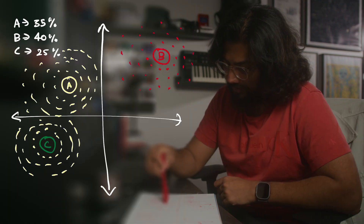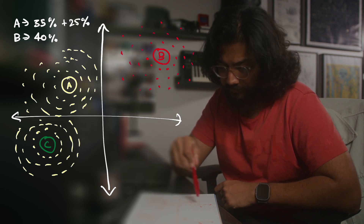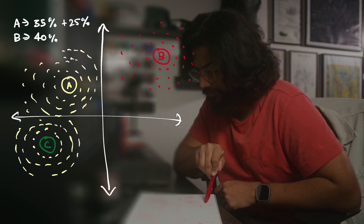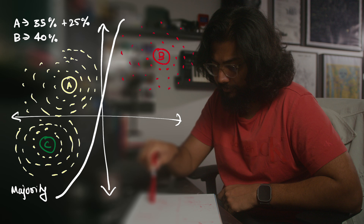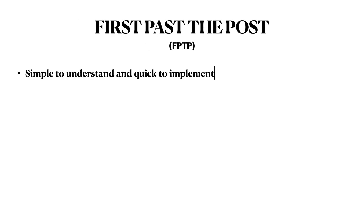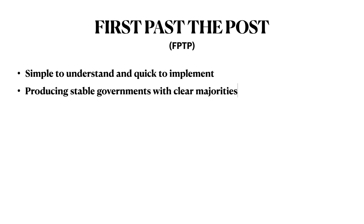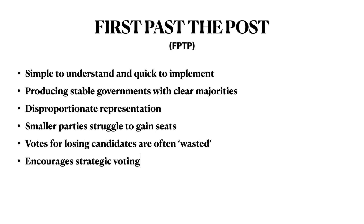If all the voters of C instead vote for A — because A is closer to their choice of policies — they will make sure that candidate B, which is far from their preferred policies, does not get elected, even though B has the most votes. To summarize: first-past-the-post is simple to understand and quick to implement, often producing stable governments with clear majorities. However, it can lead to disproportionate representation where the number of seats won doesn't reflect the popular vote. Smaller parties struggle to gain seats, and votes for losing candidates are often wasted.